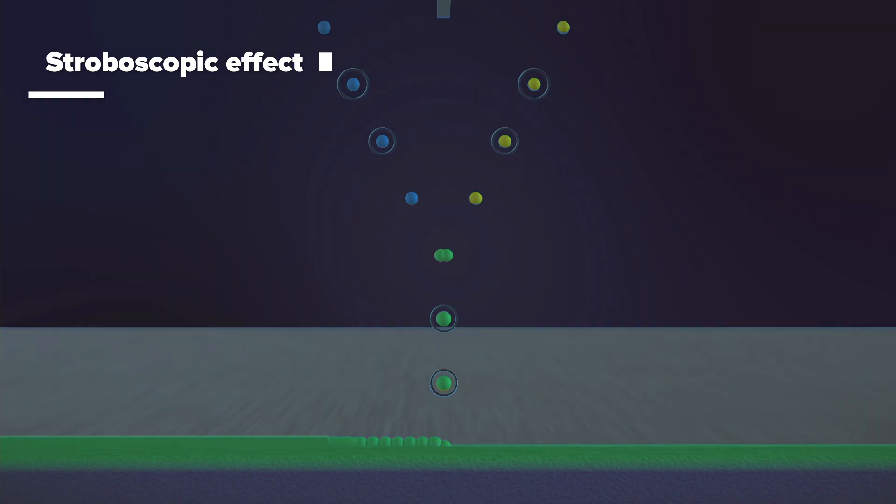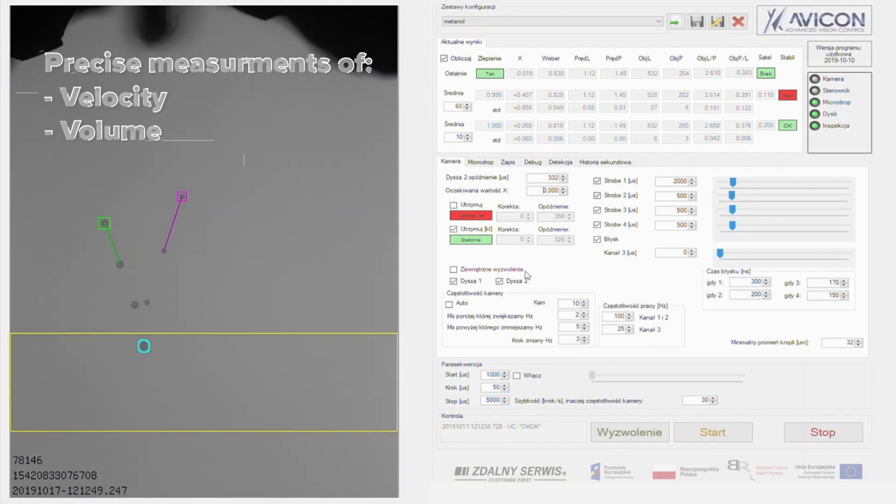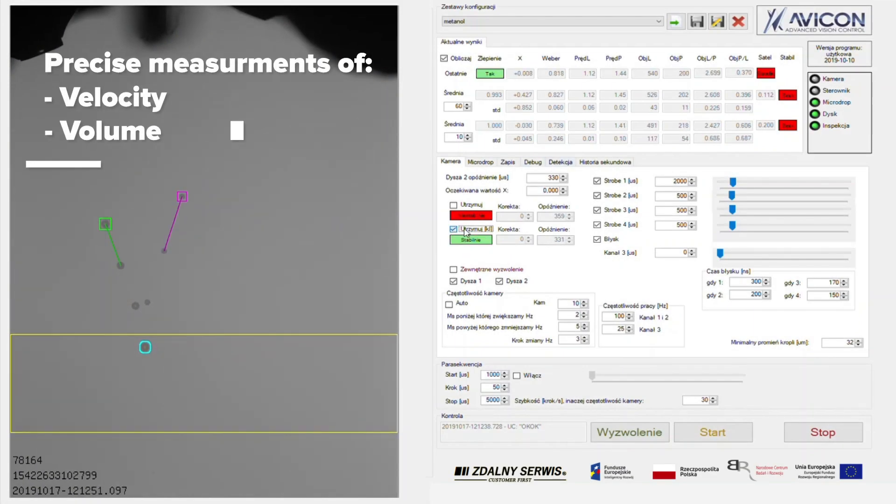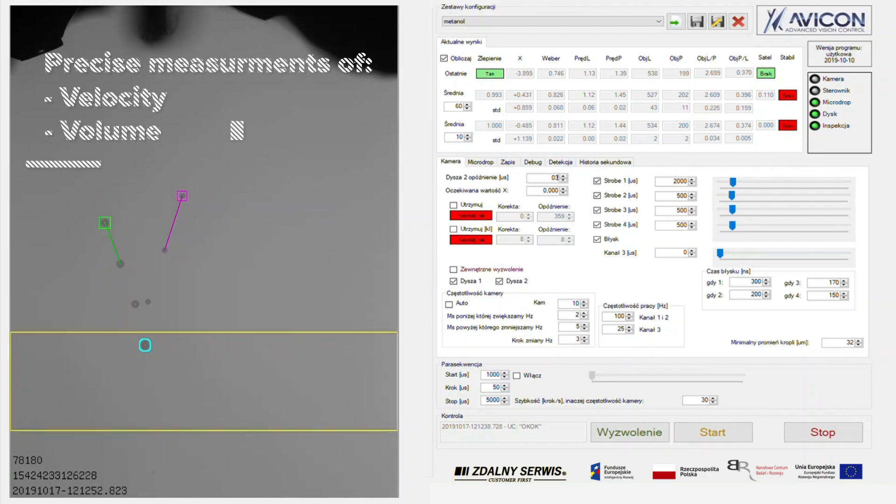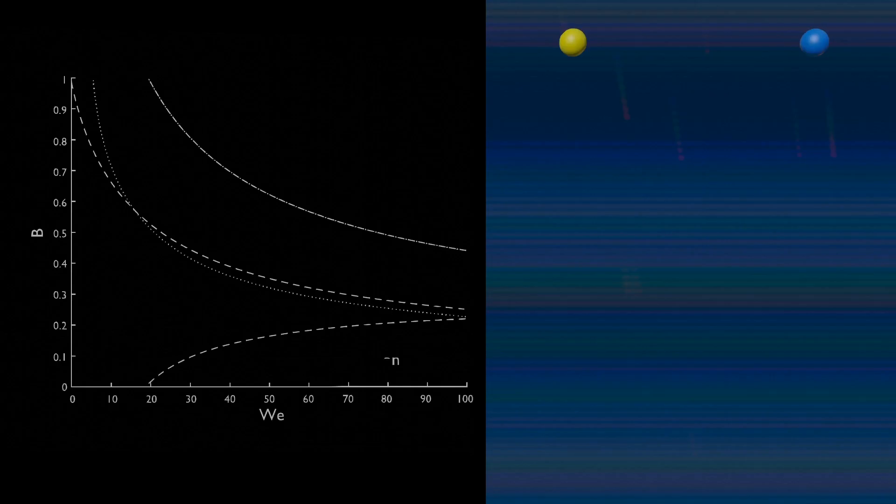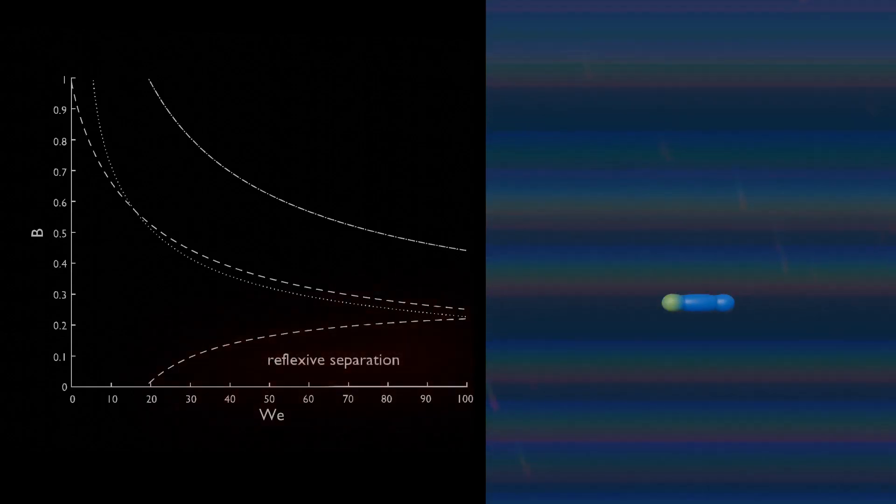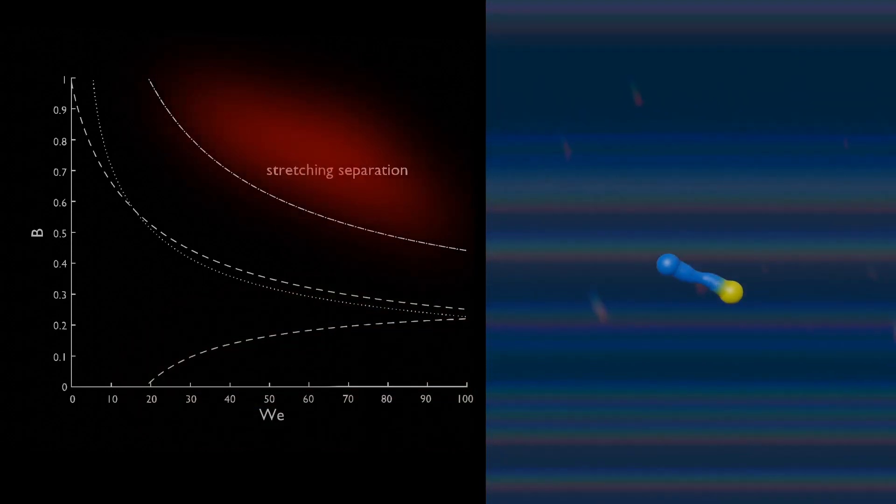The DRIP utilizes stroboscopic effect to precisely measure each jetted droplet's velocity and volume. Not all droplet collisions result in coalescence. For this reason, precise control of the collision parameters is required as well.